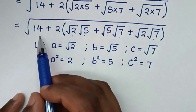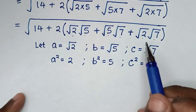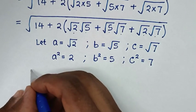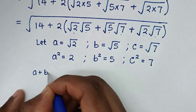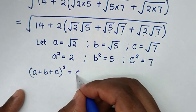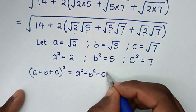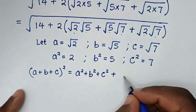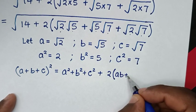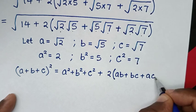Then from this part under the square root, we apply the algebraic expansion rule in this form: (A plus B plus C) squared equals A squared plus B squared plus C squared plus 2 bracket A times B plus B times C plus A times C.